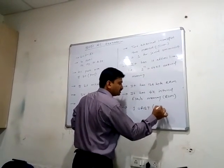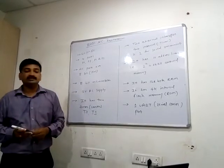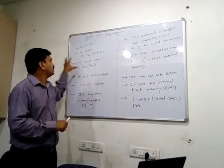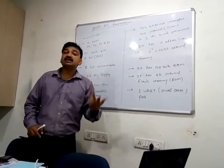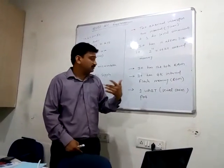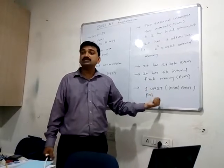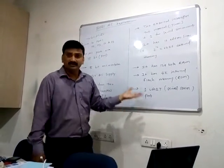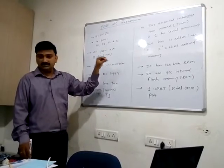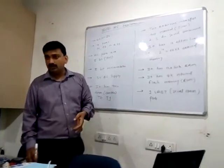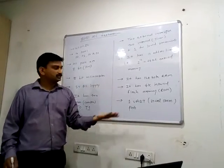Additionally, the 8051 has 1 UART — Universal Asynchronous Receiver Transmitter — that is the serial communication port. While the microcontroller uses parallel communication through the 4 ports P0, P1, P2, and P3, the UART enables serial communication for transmitting and receiving data serially. These features will be studied in detail in the next lectures.